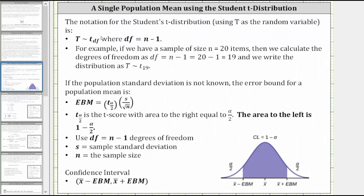The notation for the student's t-distribution is shown below, where T is the random variable and df stands for the degrees of freedom. For example, if we have a sample size of n equals 20 items, then we calculate the degrees of freedom as 20 minus one, which is 19, and we use the notation shown here to indicate the random variable t is represented by a t-distribution with 19 degrees of freedom.